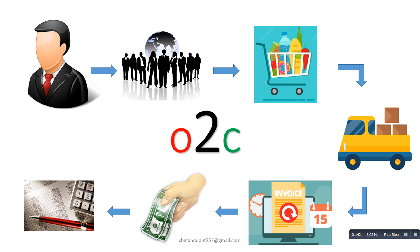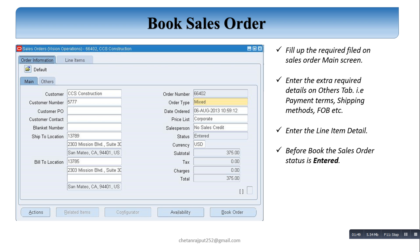Now we discuss the Oracle Order2K Cycle Transactional Flow. In the Transactional Flow, the first step is to Book the Sales Order. As per the customer requirement, the order team generates the booked order in the system using the Sales Order screen. The screen shows all the required detail fields needed when creating a Sales Order in the Oracle system.